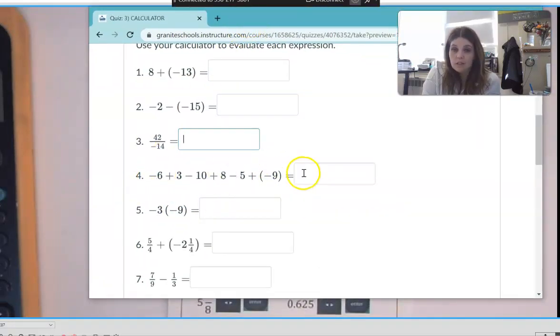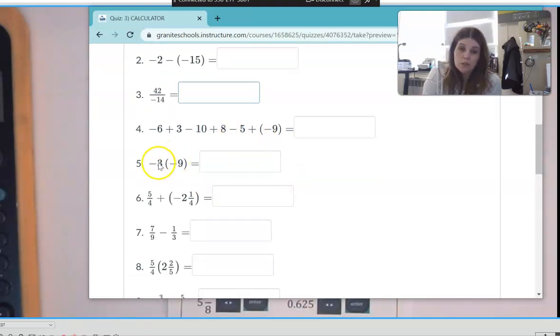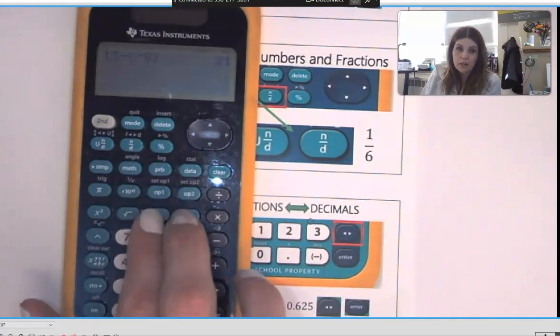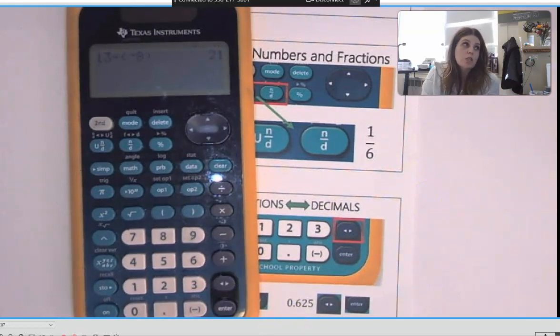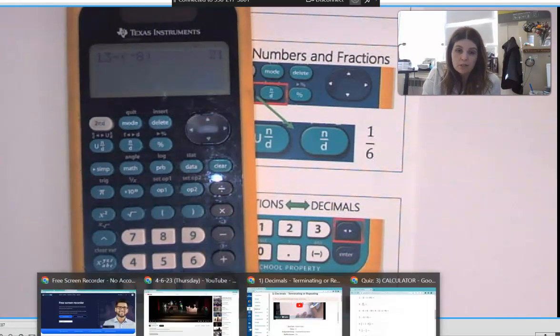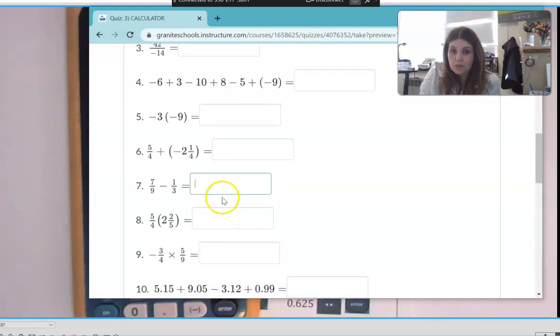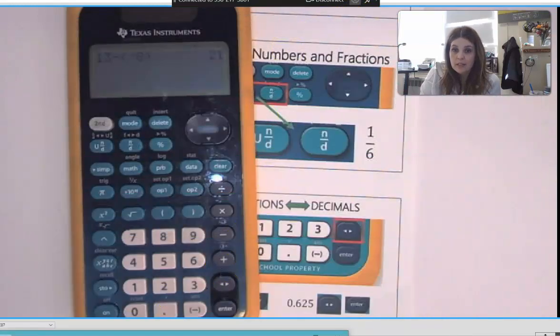On number four you would enter this in exactly like you see it into your calculator with the parentheses. In fact, for the rest of these you will. So like on five and six where you see this parenthesis, you want to make sure that you're actually using your calculator and your parentheses buttons right here to enter things in exactly like you see them. So that's part of why I'm having you take this quiz, because I want you to practice plugging things into your calculator exactly like the problem gives them to you.